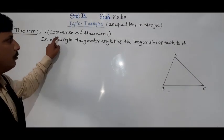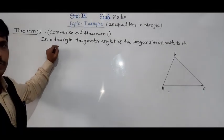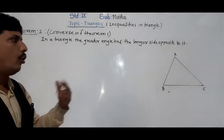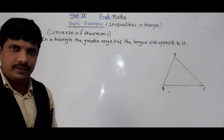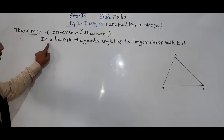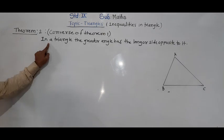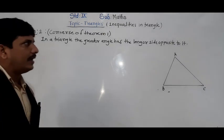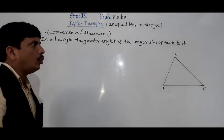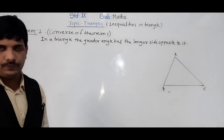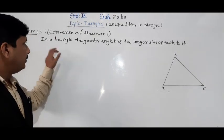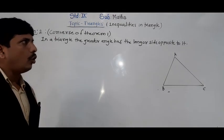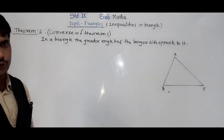Now we are going to see the converse of theorem number 2. The statement is: in a triangle, the greater angle has the longer side opposite to it.